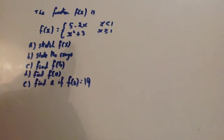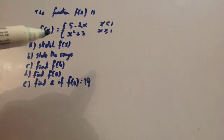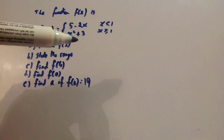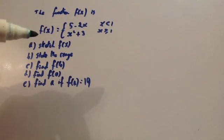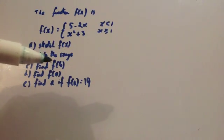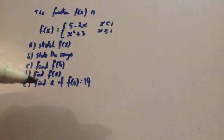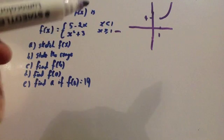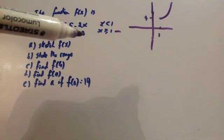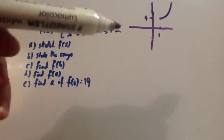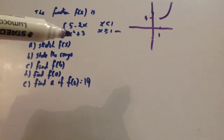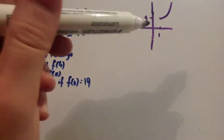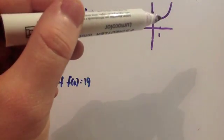Here's another type of functions question. The function f(x) is defined by f(x) = 5 − 2x if x < 1, or x² + 3 whenever x ≥ 1. You've been asked to sketch the graph, state the range, find f(4), find f(0), and find a if f(a) = 19. When sketching this graph, I've drawn the x² + 3 part first for whenever x ≥ 1. I put 1 into x² + 3: 1² + 3 = 4, so I went 1 across and 4 up. This is just a quadratic graph that would cross at 3, so I started at (1, 4) and went all the way up like a quadratic.